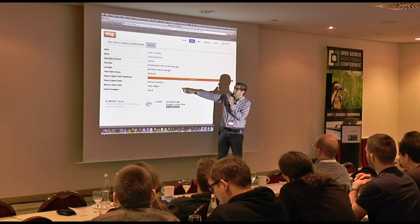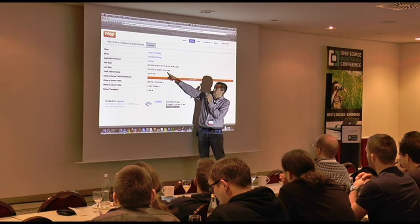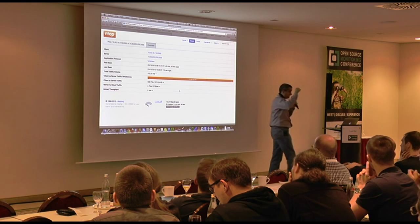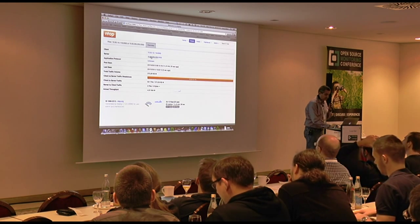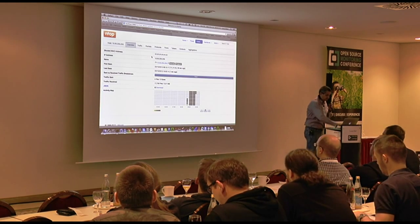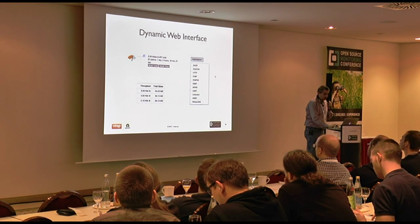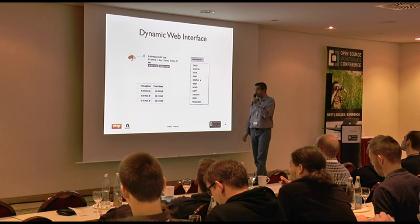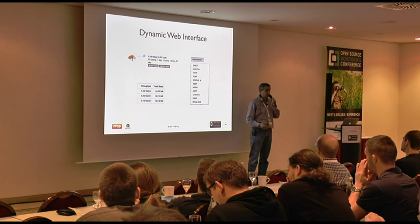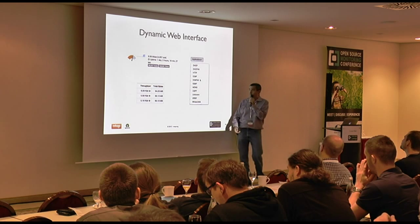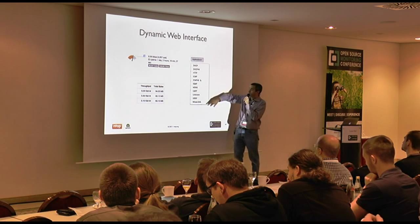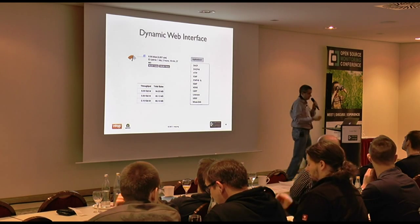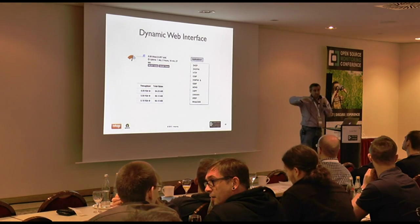Everything is dynamic here, through JSON. Whatever you see, you can click. For instance you can click on an IP address. I told you that nDPI understands 170 protocols. We only show you those available on your network, so you are not confused by hundreds of names you have never used.